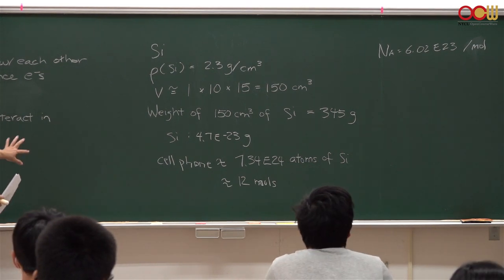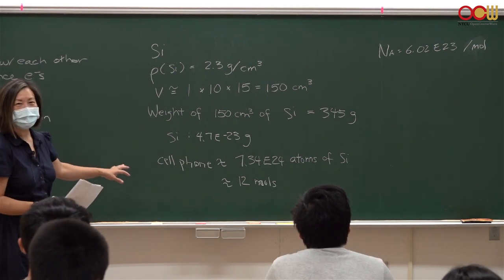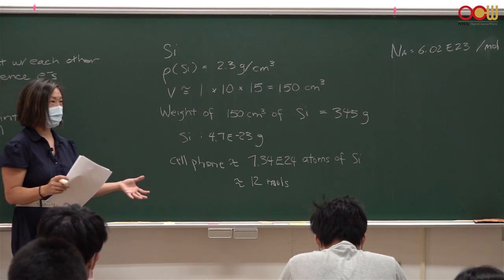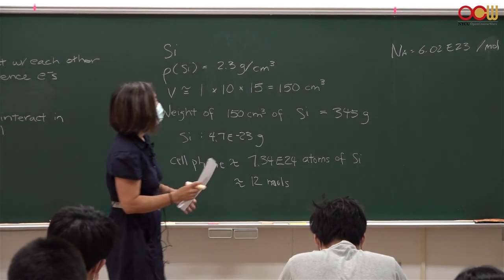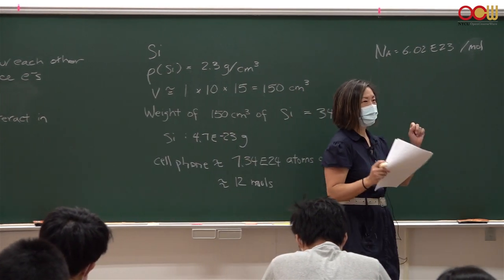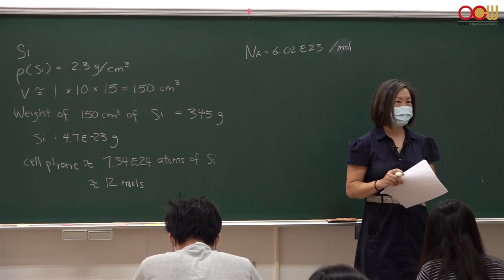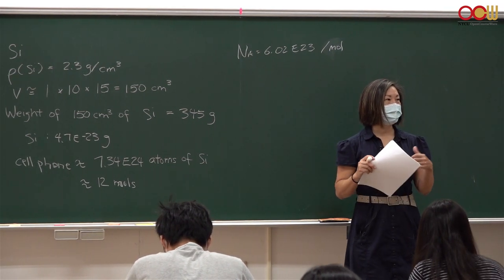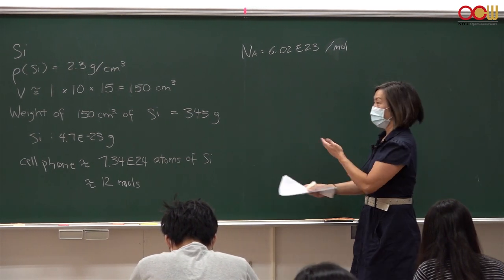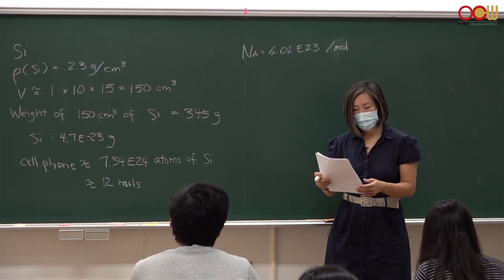So that's how many atoms we're dealing with when you look at just a regular cell phone. It's a lot. We can't just look at how two atoms connect to one another — it doesn't tell us the whole story. We need to look at what happens when you have this many atoms next to one another.